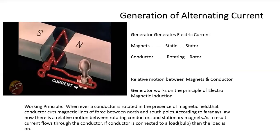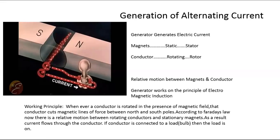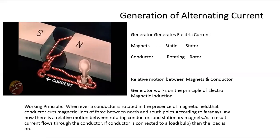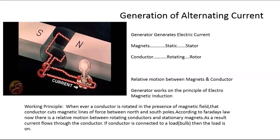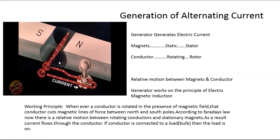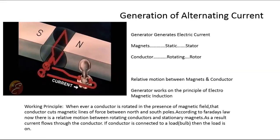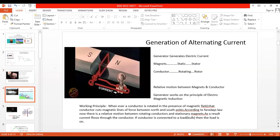Now the question is: how to rotate the conductor? You cannot rotate it by hand because if the conductor is generating electricity, the current flows through your body and you get a shock. One example: a cycle wheel can be connected to the conductor, and when you cycle, the wheel rotates the conductor and electricity is generated. Think of different examples of how to rotate this conductor.